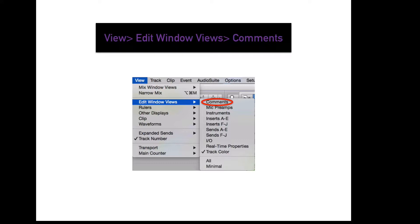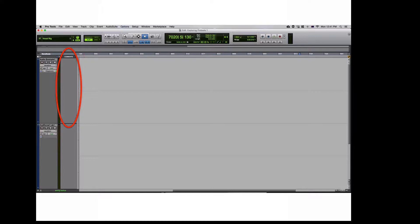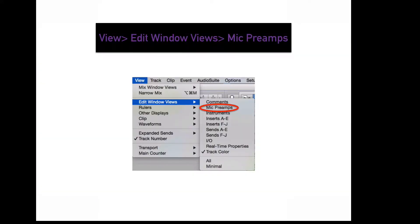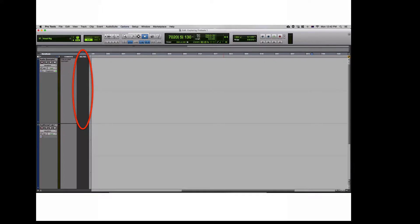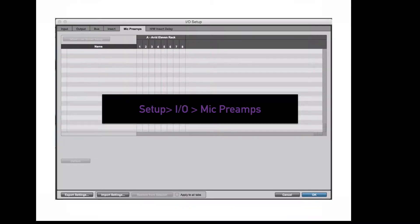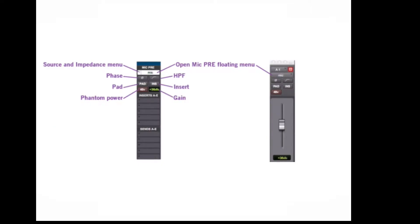To view your track comments in your edit window, go to View, Edit Window Views, Comments. Left-click on the gray box to add text comments to a specific channel. To display your preamp controls in your edit window, go to View, Edit Window Views, Mic Preamps. There are currently no preamps set up. Go to Setup, Peripherals, Mic Preamps, and fill in the corresponding info. Next, go to Setup, I/O, Mic Preamps to fill in the I/O path of the hardware unit.